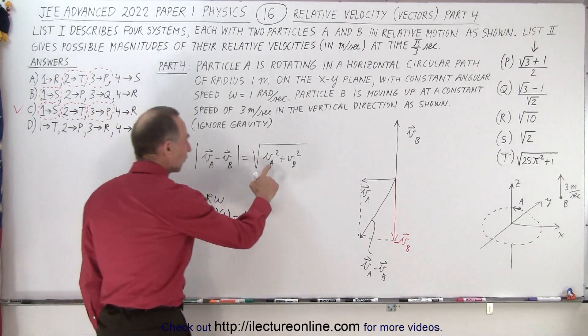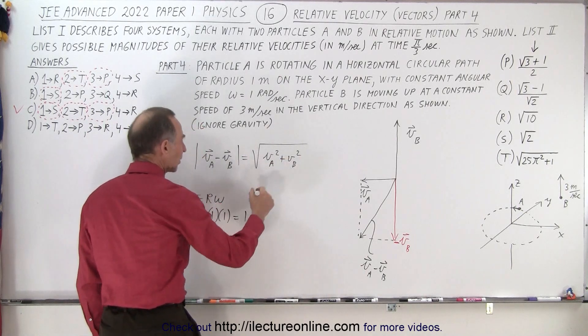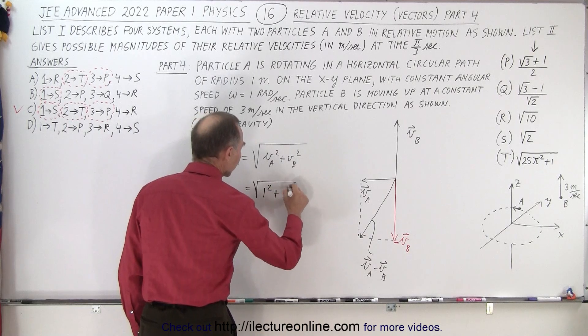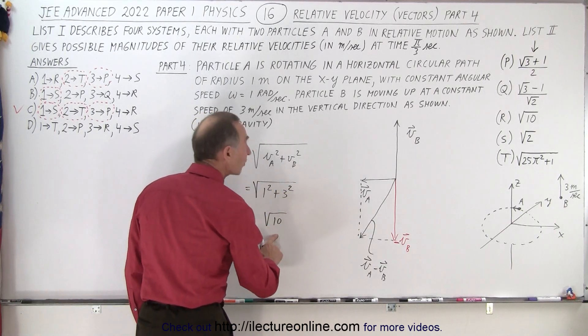And so therefore, velocity of vector A would be 1, velocity of vector B would be 3. So this would be equal to the square root of 1 squared plus 3 squared, which is 10. The square root of 10, like this.